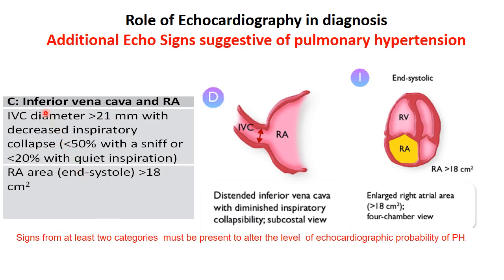The third and final category of echo signs suggestive of pulmonary hypertension relates to the inferior vena cava and right atrium: IVC diameter more than 2.1 cm with poor inspiratory collapse, and dilated right atrium above 18 cm². Signs from at least two categories must be present to alter the level of echocardiographic probability of pulmonary hypertension.